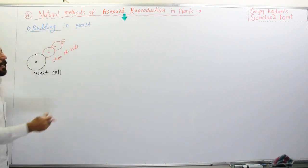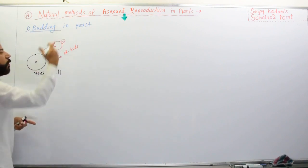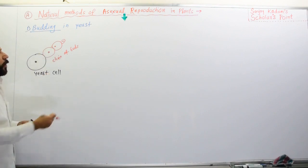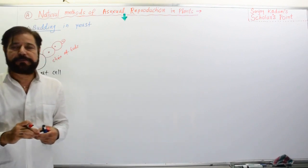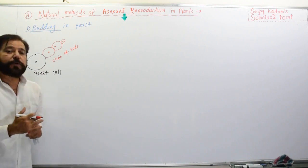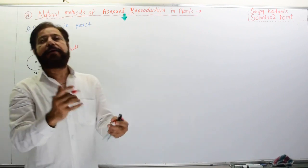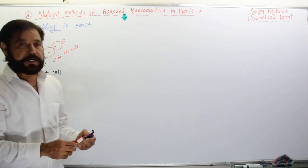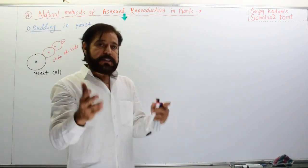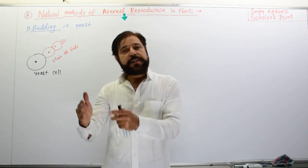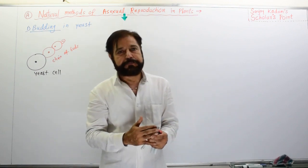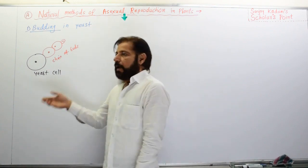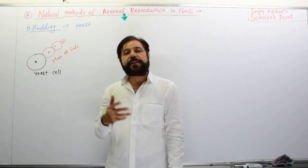When buds become fully grown, they form new buds again. This budding goes on and within a short period we can get a lot of yeast cells. Yeast reproduces asexually by budding. Asexual reproduction is always a rapid method in which mitosis occurs.